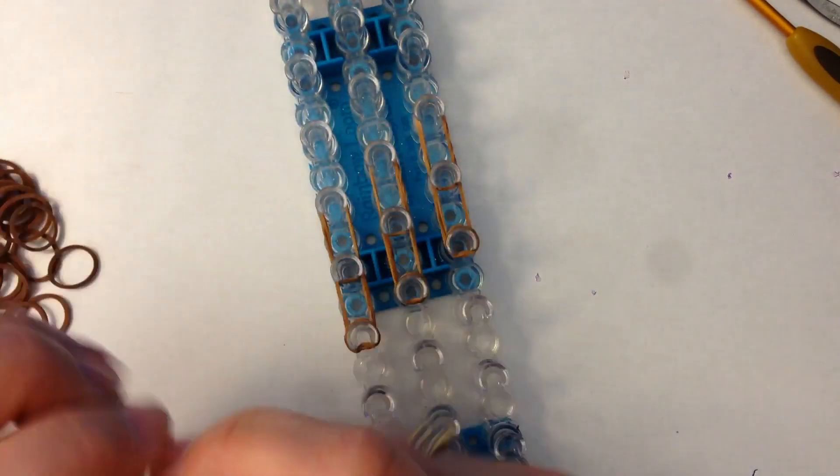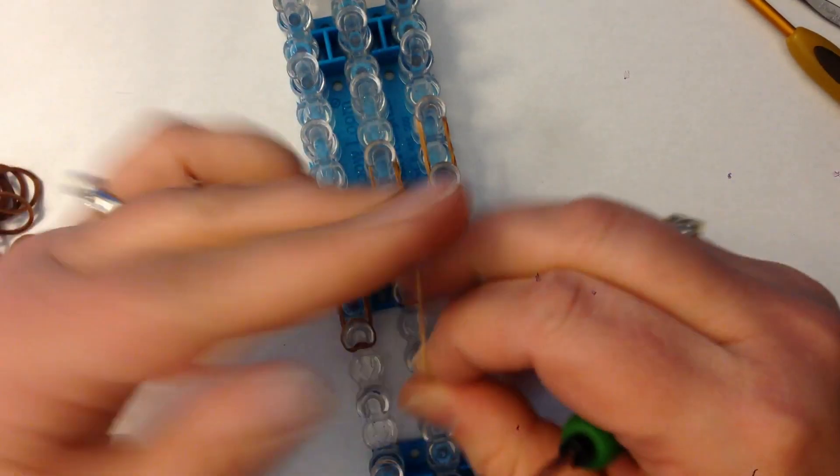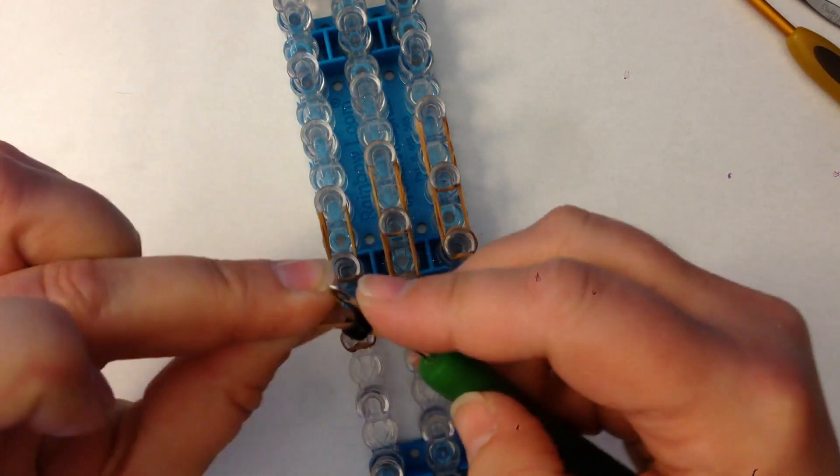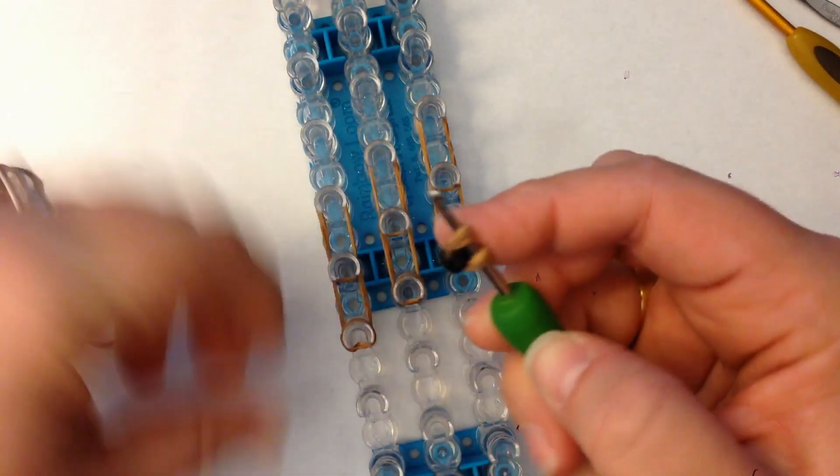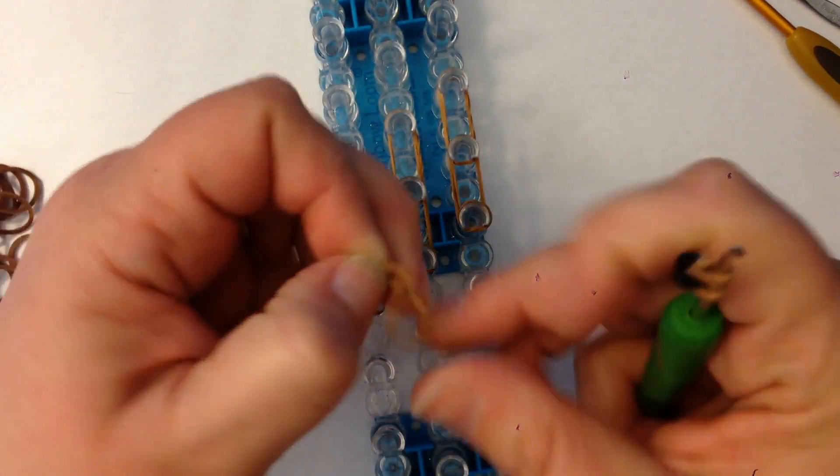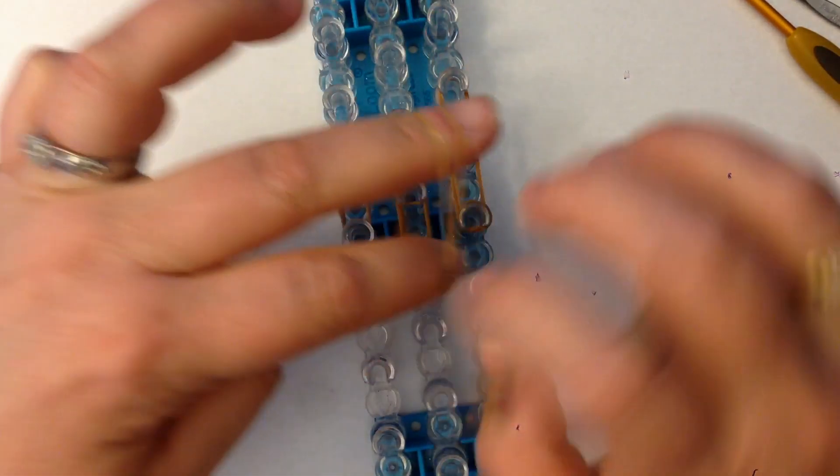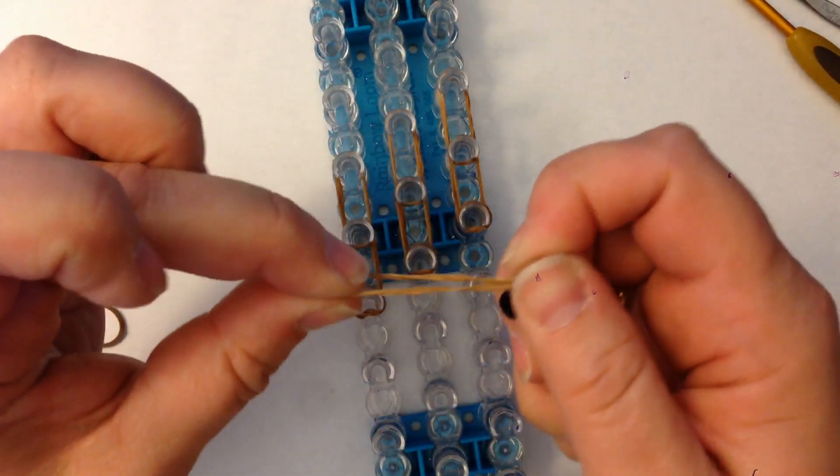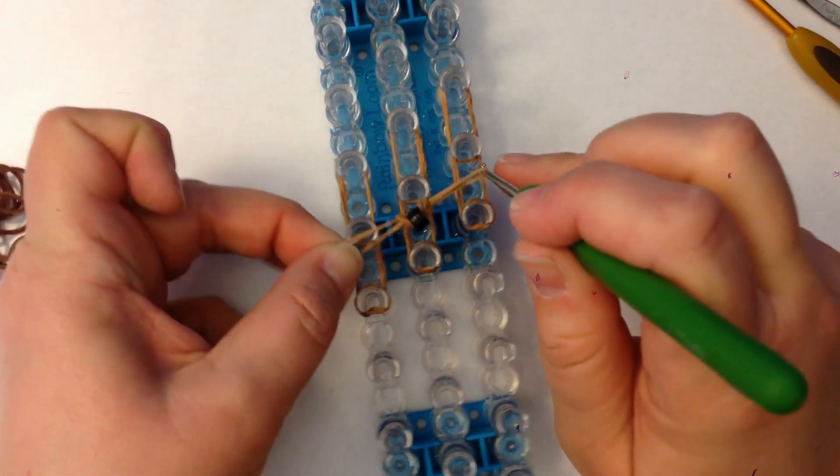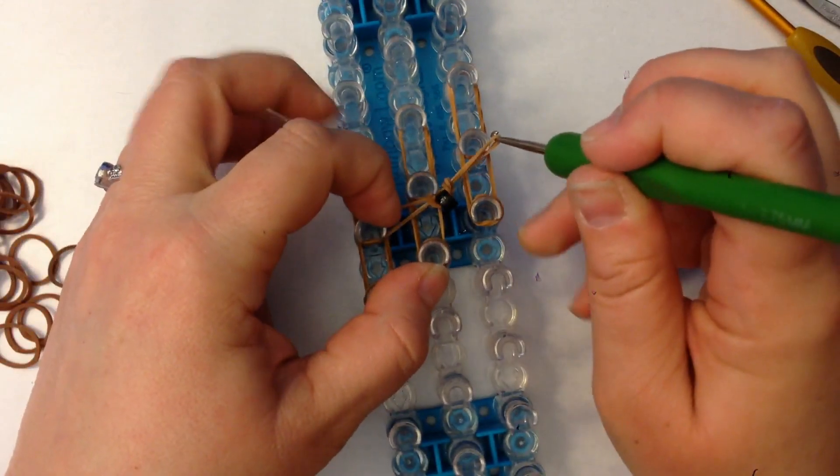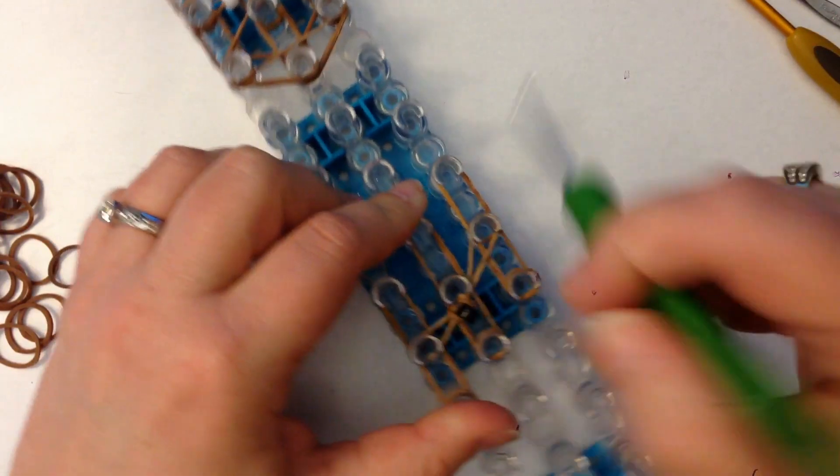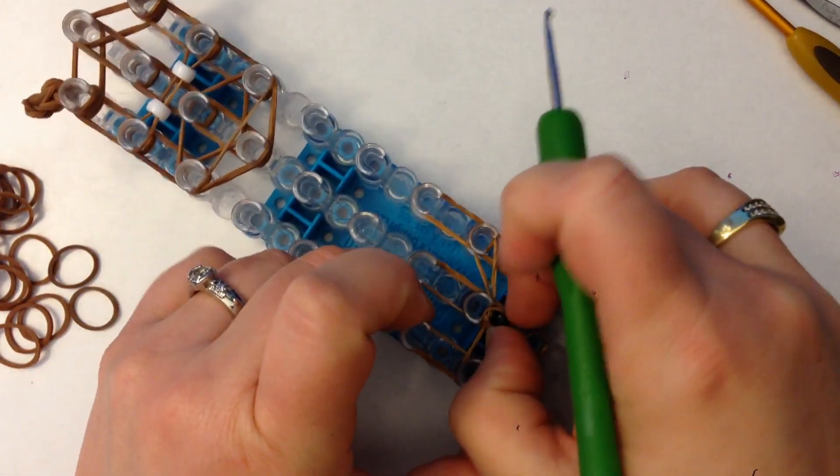Now for our crossover band, what we're going to do is take a single band, loop it on itself, figure eight. And we are going to stretch that across those three pegs like that and keep that as much in the middle as you can.